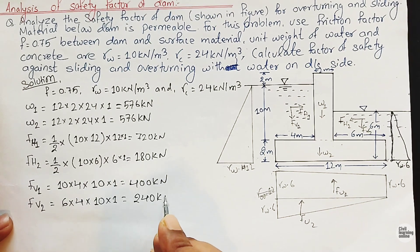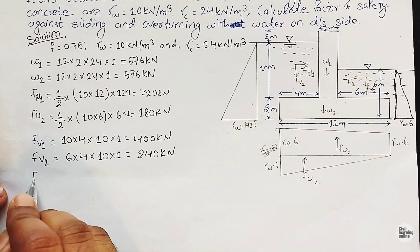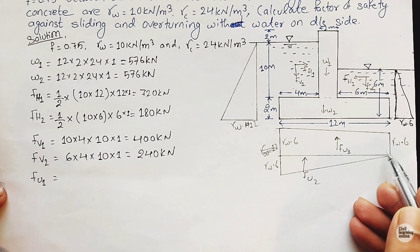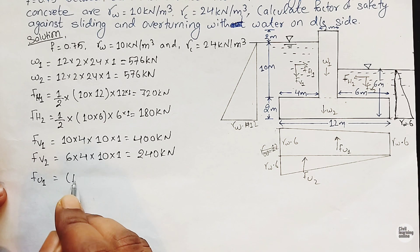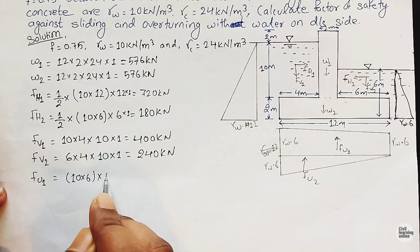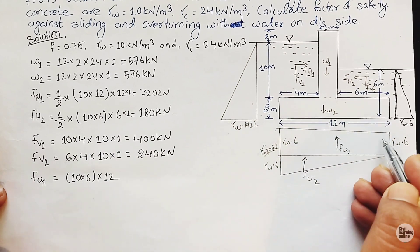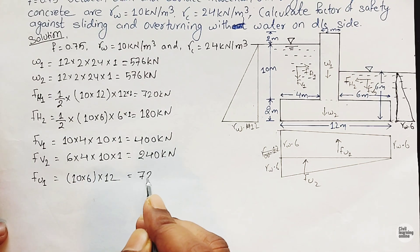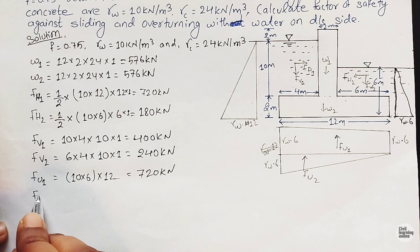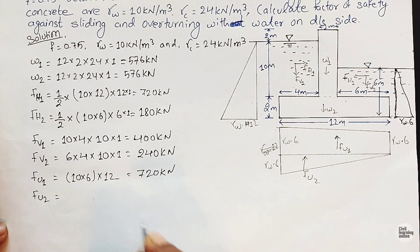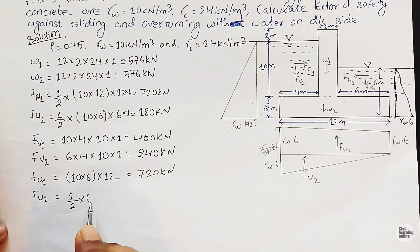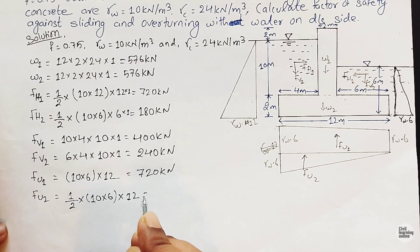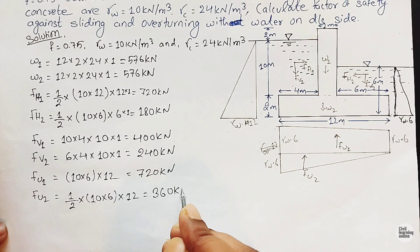For uplift pressure, F_U1 is rectangular in shape: gamma_w × 6 × 12 × 1 = 720 kilo-Newtons. F_U2 is triangular in shape: ½ × 10 × 6 × 12 = 360 kilo-Newtons.